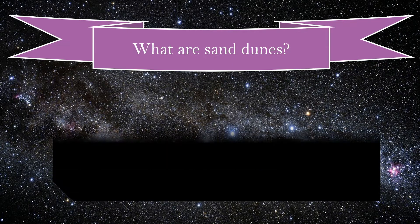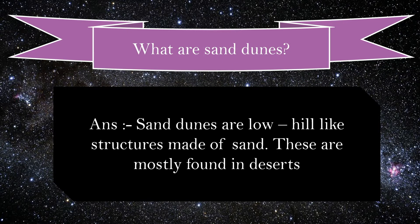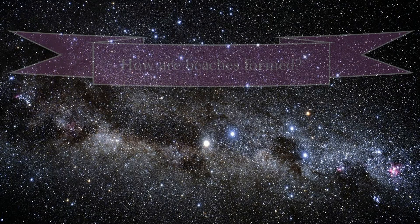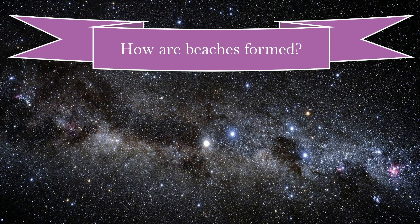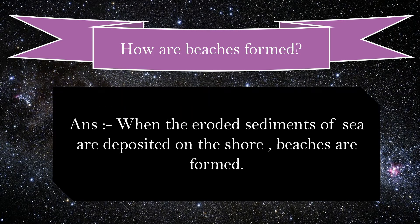What are sand dunes? Sand dunes are low hill-like structures made up of sand. These are mostly found in deserts. How are beaches formed? When the eroded sediments of the sea are deposited on the shore, beaches are formed.